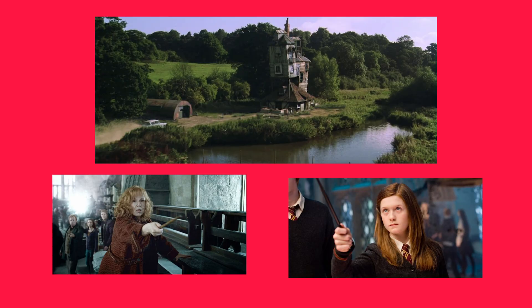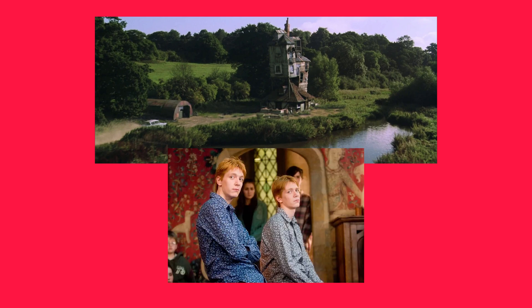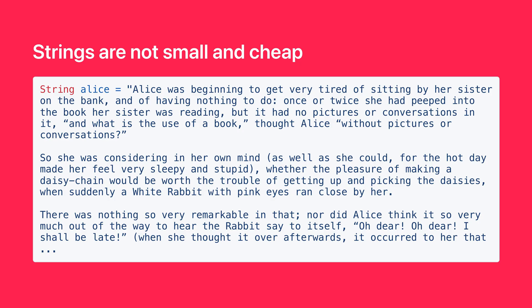So here we have two people, and they both live at the same address. Instead of storing the address twice, Java stores the address once and has both people reference it. On the other hand, because the ages are primitives, each person has their own age — they're stored directly in memory. Even if two people have the same age, Java will still store two copies of the age, because primitives are very small and cheap to store. It's not worth the overhead of trying to share them.